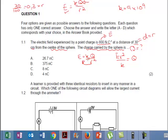So E is 800. So it's 800 times by the distance, which is 0.3 squared, all over K, which is 9 times by 10 to the 9. And that is going to give us the charge Q. So we're going to pop that in our calculators.